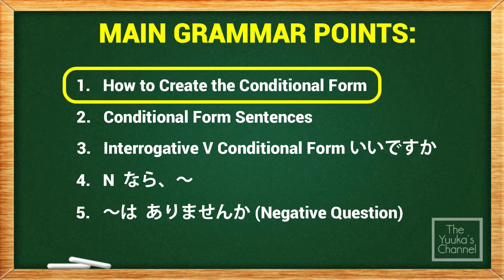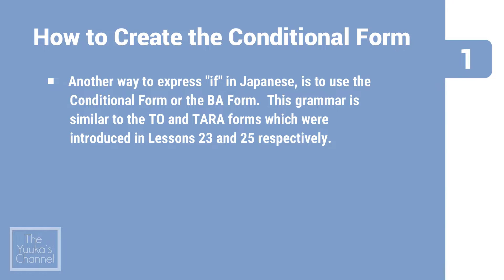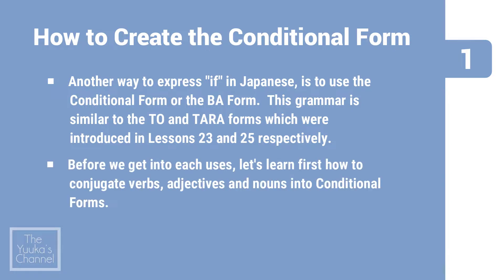First topic: how to create the conditional form. Another way to express 'if' in Japanese is to use the conditional form, or the ba form. This grammar is similar to the to and tara forms introduced in Lessons 23 and 25 respectively. Before we get into each use, let's learn first how to conjugate verbs, adjectives, and nouns into conditional forms.